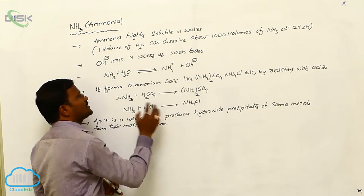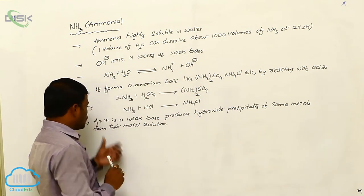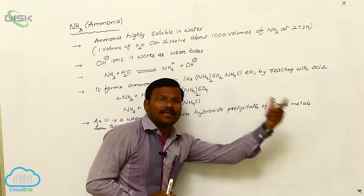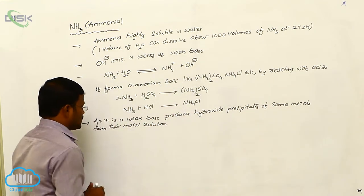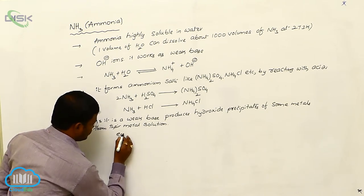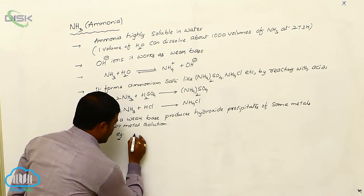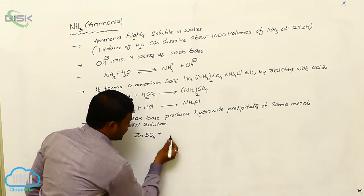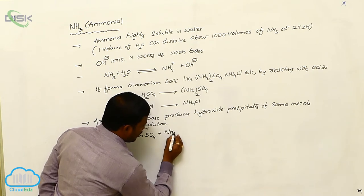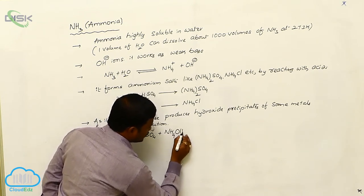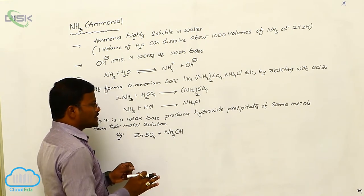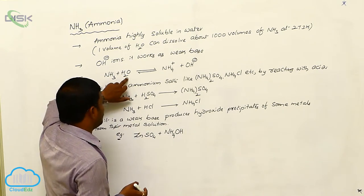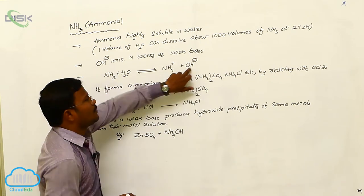The release of OH⁻ ions is responsible for the weak basic character of ammonia. Due to this weak basic character, it produces hydroxide precipitates of some metal atoms from their metal solutions. For example, zinc sulfate when reacted with ammonium hydroxide (NH₄OH) — note that ammonium hydroxide is also called dilute ammonia, because when ammonia dissolves in water it produces ammonium hydroxide.